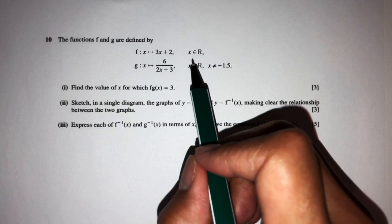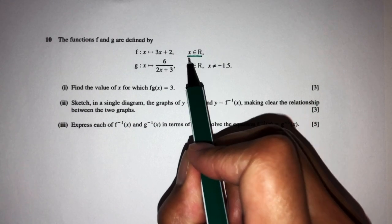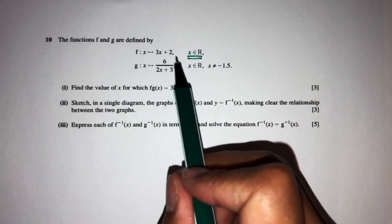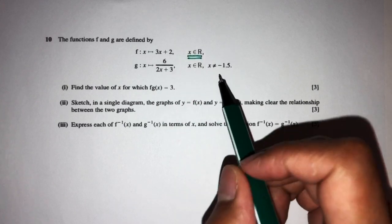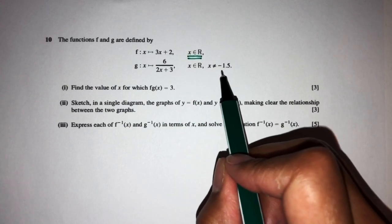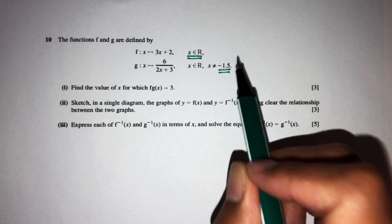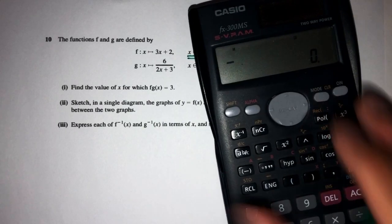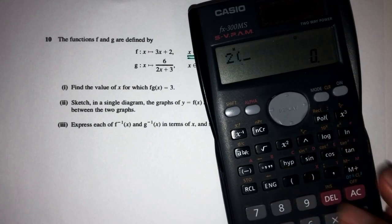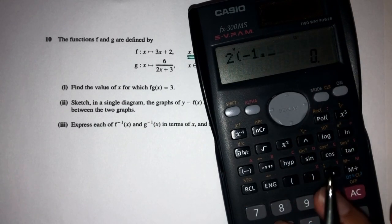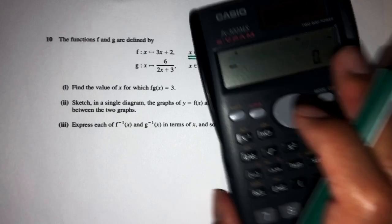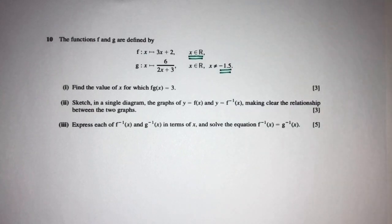Now, x can be any real values. We also have g of x equal to 6 over 2x plus 3, where x cannot be minus 1.5. This makes sense because we cannot divide by 0. If you take the value of 2 times minus 1.5 plus 3, that will be 0, so 6 cannot divide by 0.